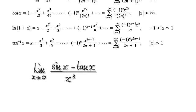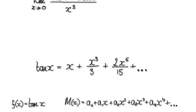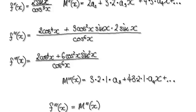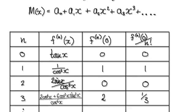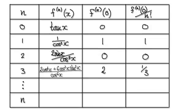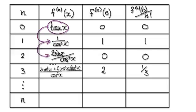Following on from the previous video, we've got to this table here. Rather than doing our long method, it's much quicker to do this table. You would start out with your original function, differentiate it — that will then give you this, differentiate it — that will then give you this, differentiate it — that will then give you this.